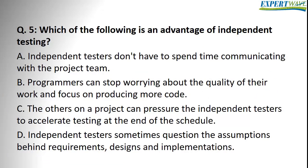Question number five: which of the following is an advantage of independent testing? Option A — independent testers don't have to spend time communicating with the project team — is a wrong statement. Testers should communicate with the project team no matter how independent they are. Option B — programmers can stop worrying about the quality of their work and focus on producing more code — is also wrong. Programmers should never stop worrying about quality; they still have to do unit testing no matter who tests after them.